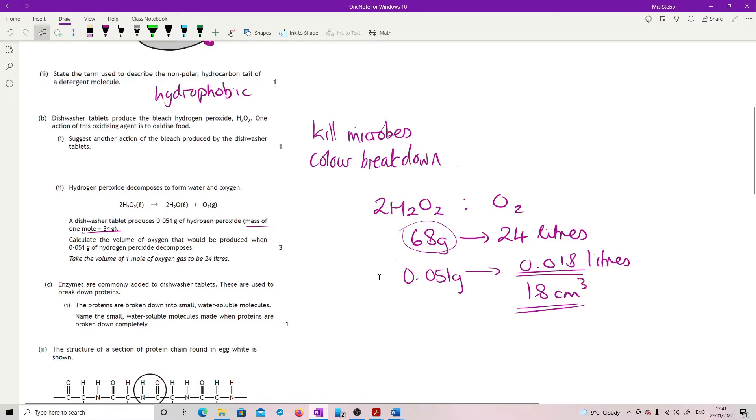Enzymes are commonly added to dishwasher tablets that are used to break down proteins. Proteins are broken into small water-soluble molecules. Name the small water-soluble molecules. This is amino acids.